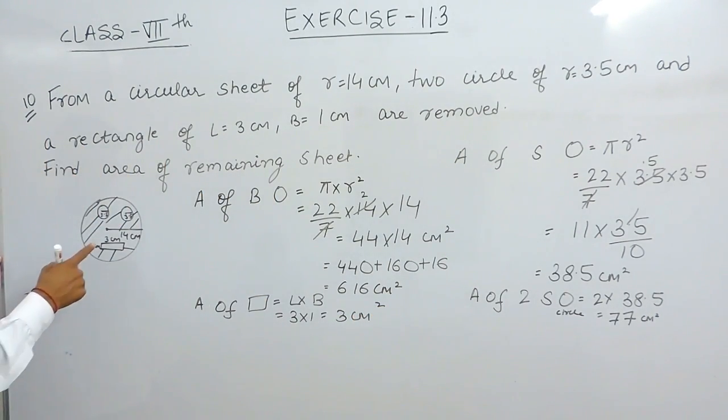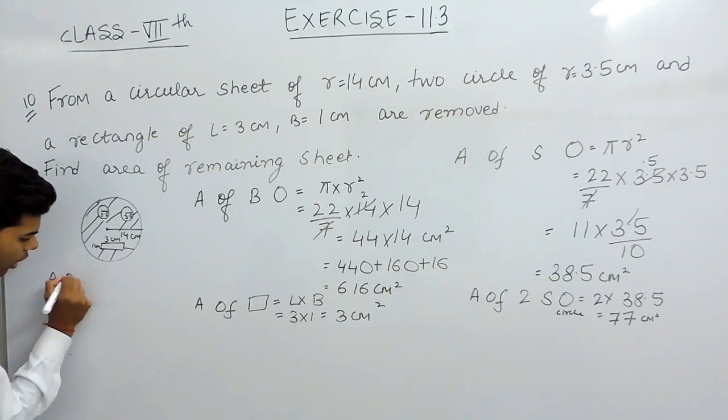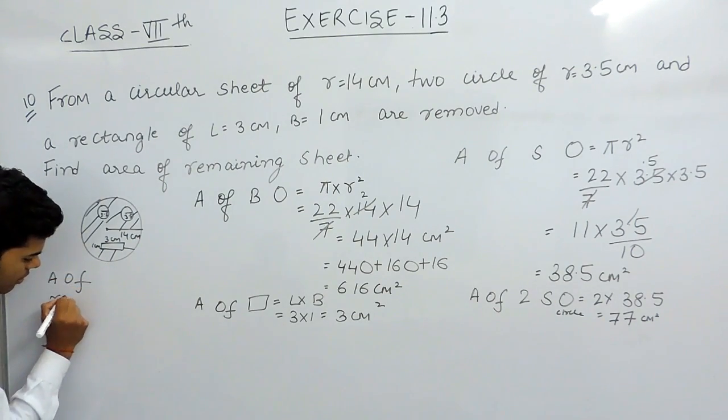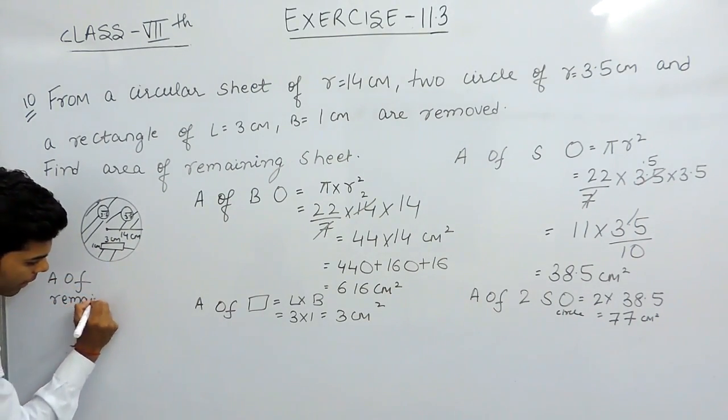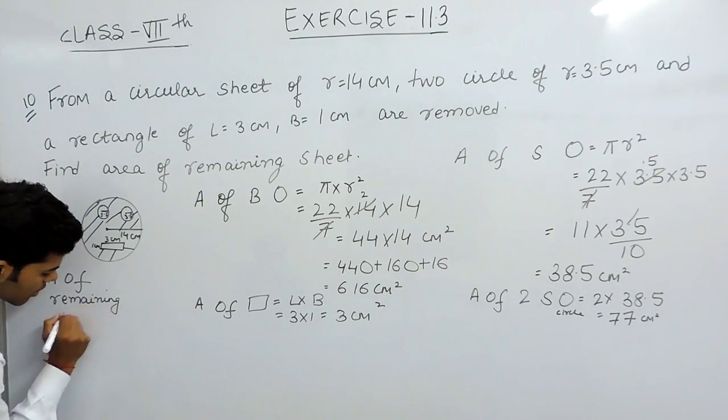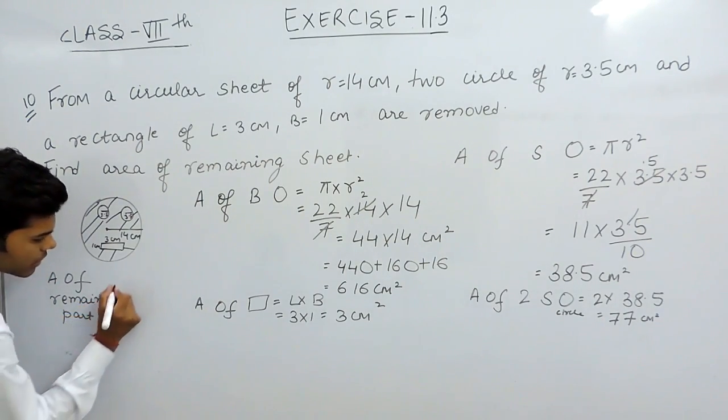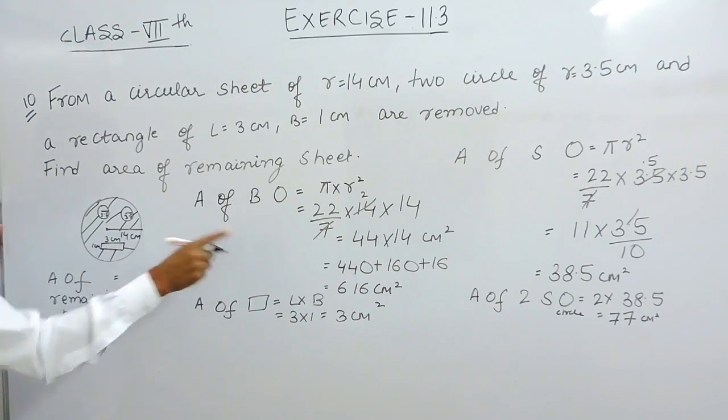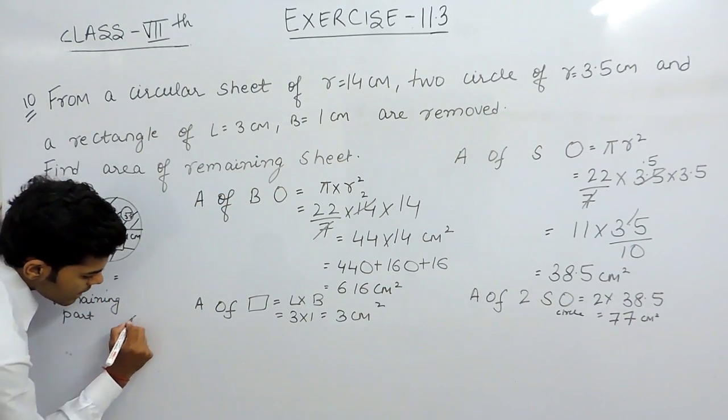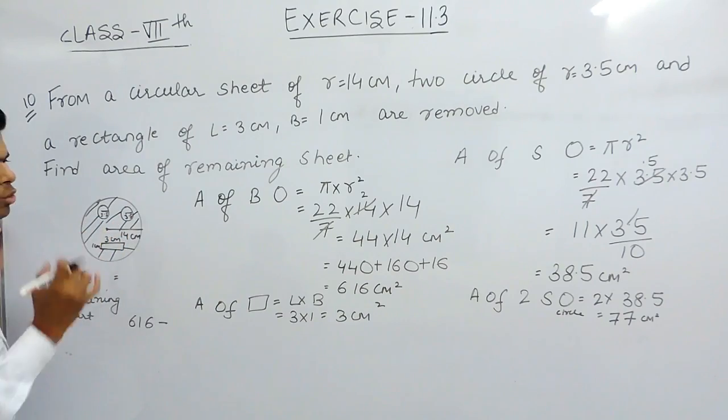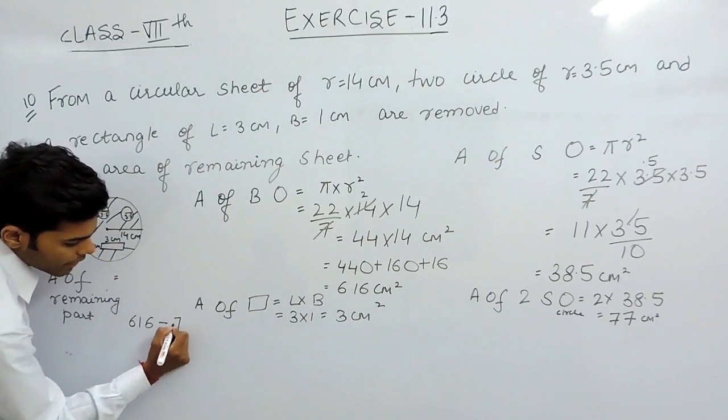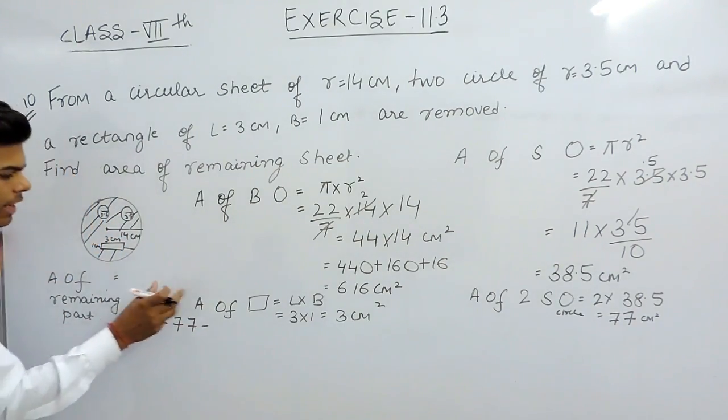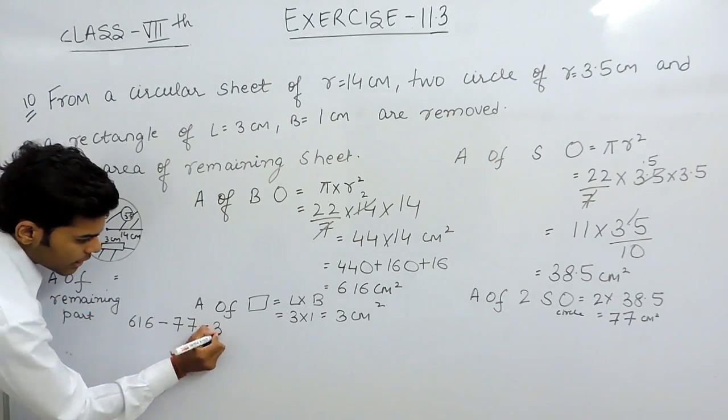Now, the area of remaining part will be equal to the area of the bigger circle, that is 616, minus the area of these two smaller circles, that is 77, minus the area of the rectangle, that is 3.